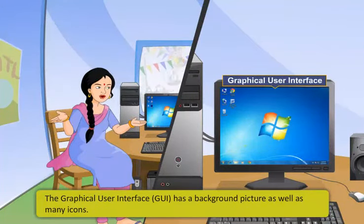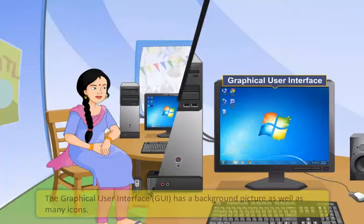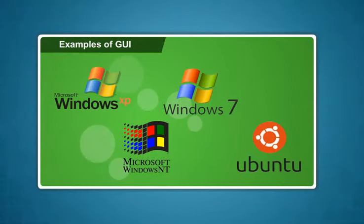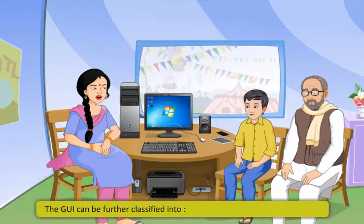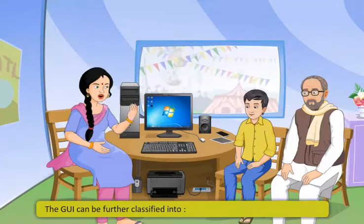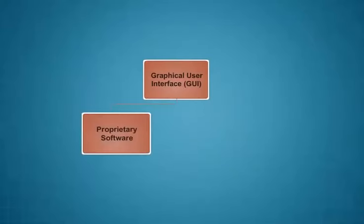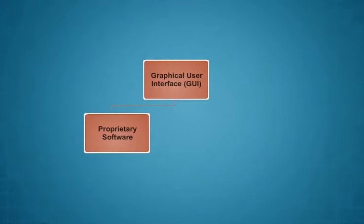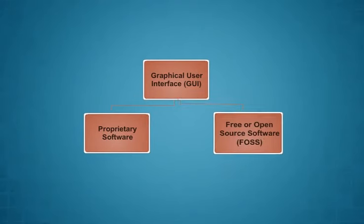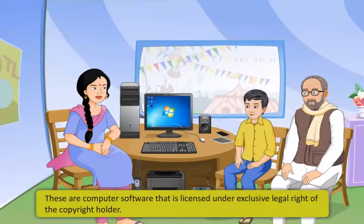A Graphical User Interface has a background picture as well as many icons. Examples of GUI are Windows XP, Windows NT, Windows 7, and Ubuntu. The GUI can be further classified into Proprietary software and Free or Open Source software.